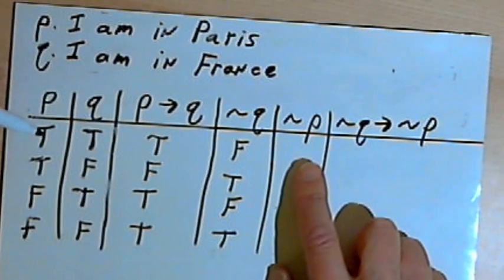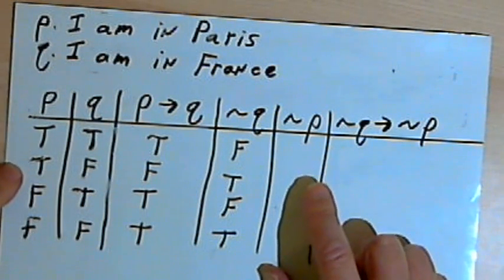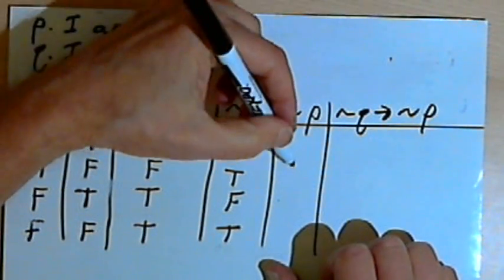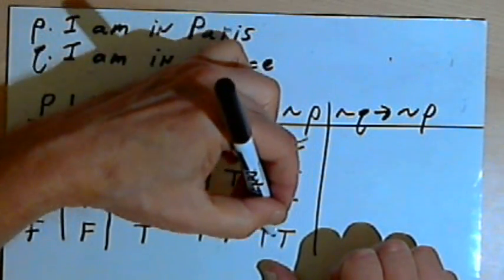For the not P column, I'll just go over to the P column and reverse those letters also. So instead of true, true, false, false, I'm going to have false, false, true, and true.